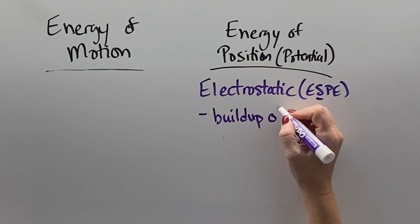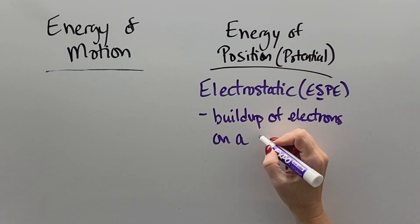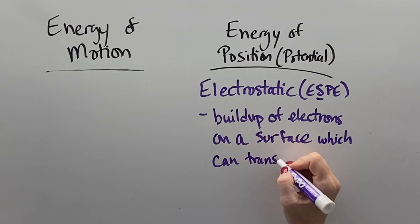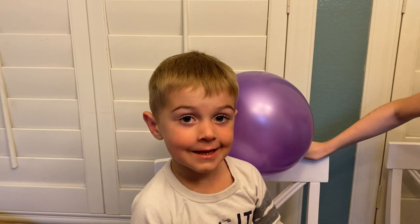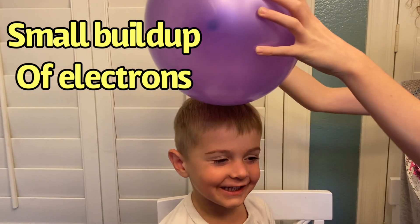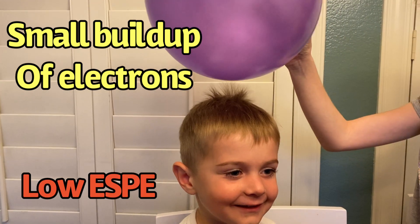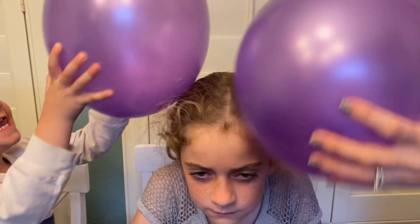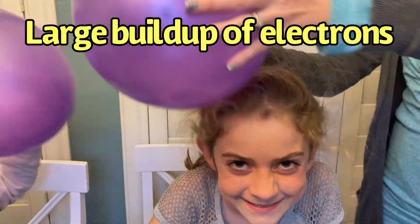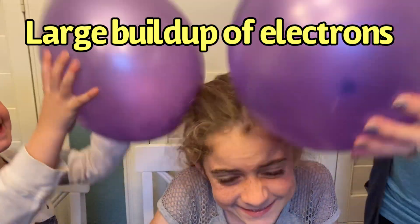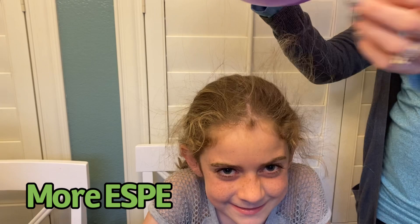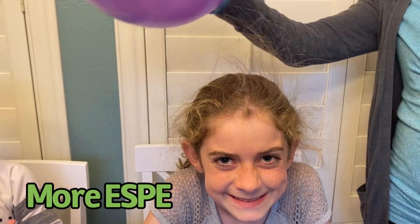Electrostatic potential energy is a buildup of electrons on some sort of surface, which then could be transferred to another surface. So if I do a little storing of electrons, then I get a little electrostatic potential. And if I get a lot of storing of electrons, then I get a lot of electrostatic potential. As you can see here. Wow, look at that hair stand up.